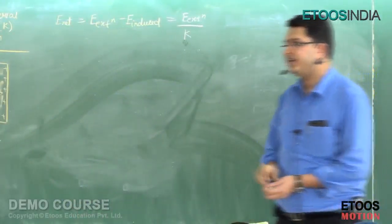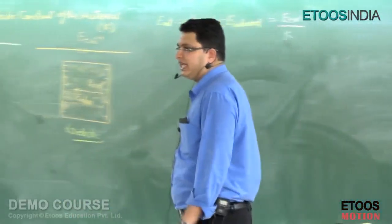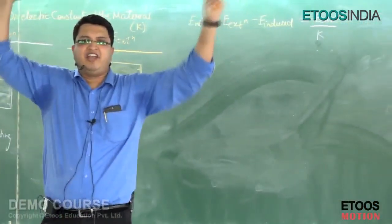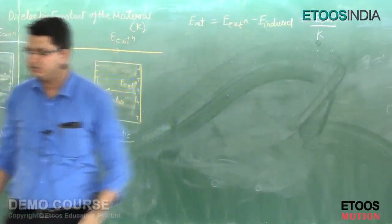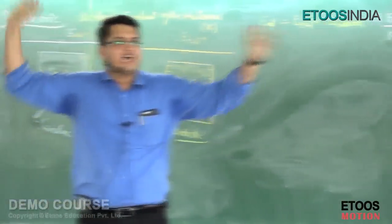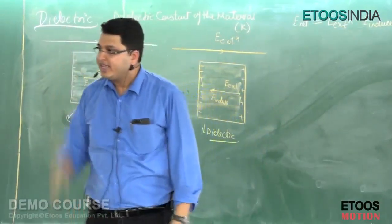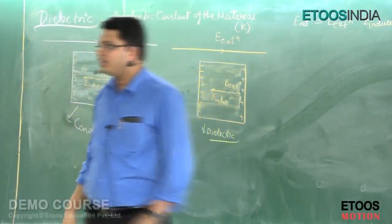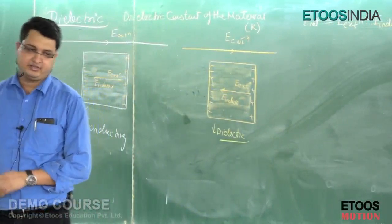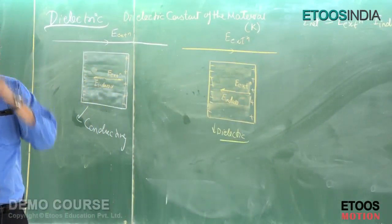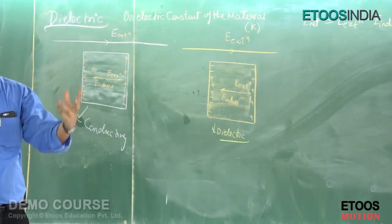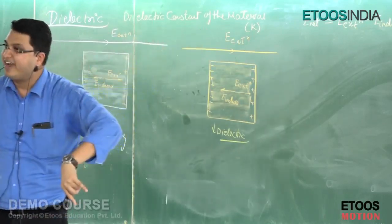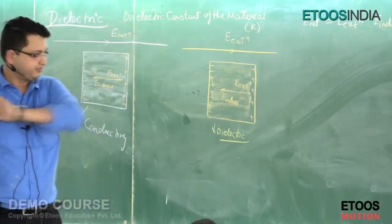Do you understand? The dielectric constant tells you about the property of the material. Does any material have an electric field inside it? The amount by which the external electric field is reduced depends on the material's property — the dielectric constant. The dielectric constant is the factor by which the external electric field will be divided.